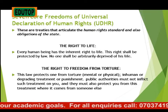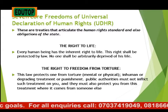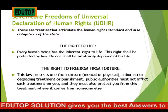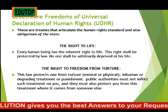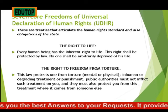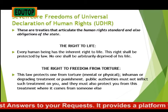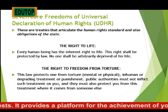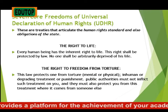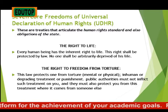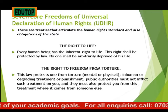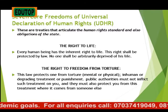The Seven Core Freedoms of UDHR are treaties that articulate the human rights standard and obligations of the state. Number 1: Right to life — every human being has the inherent right to life. This right shall be protected by law, and no one shall be arbitrarily deprived of his right. Number 2: The right to freedom from torture. This law protects one from torture, mental or physical, or any mean or degrading treatment or punishment. Public authorities must not inflict such treatment on citizens, and they must also protect citizens from this treatment where it comes from someone else.